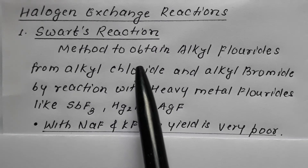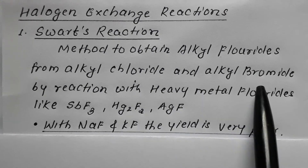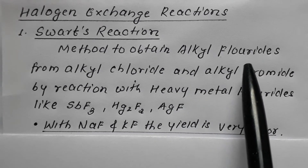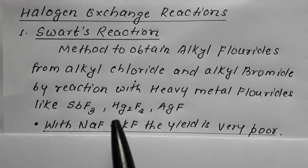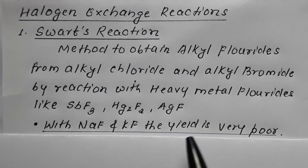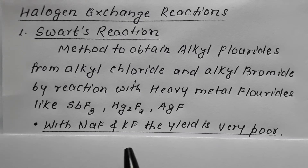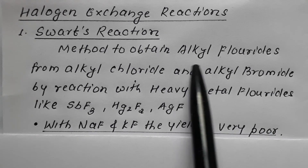The Swarts reaction is used to obtain alkyl fluoride from alkyl chloride or alkyl bromide by reaction with heavy metal fluorides like antimony fluoride, mercury fluoride, or silver fluoride. Can we use fluorides of lighter metals like NaF or KF? If we use NaF or KF, the yield of the product is very poor. Therefore we prefer using heavy metal fluorides to convert alkyl chloride and alkyl bromide into alkyl fluoride.